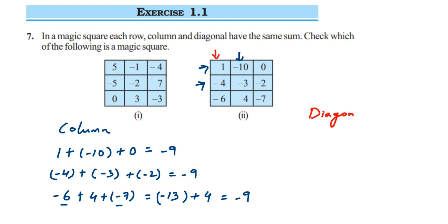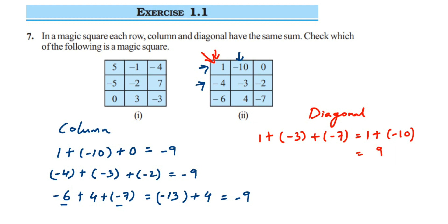Now the diagonals. First diagonal: 1 + (−3) + (−7). Adding −3 and −7 gives −10. Then 1 + (−10): subtract, 10 − 1 = 9, sign is negative — giving −9. Second diagonal: 0 + (−3) + (−6). −3 and −6 same sign: 3 + 6 = 9, sign remains negative — giving −9. Both diagonals also give −9.